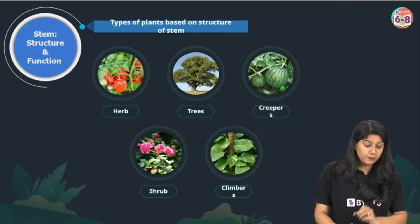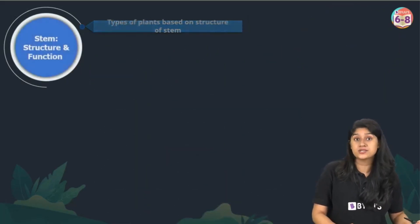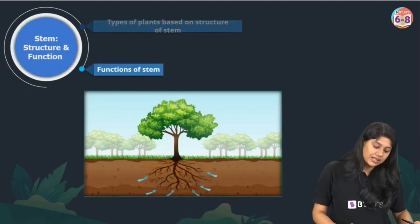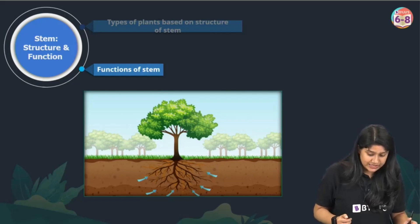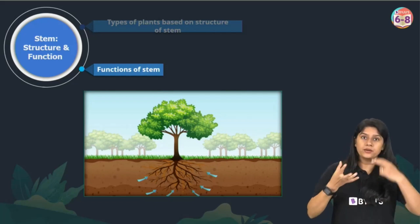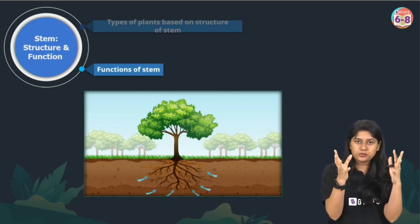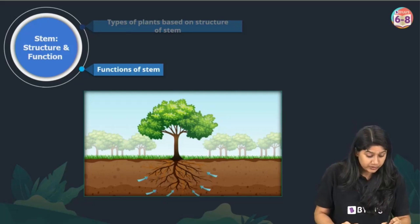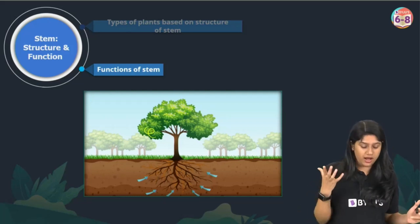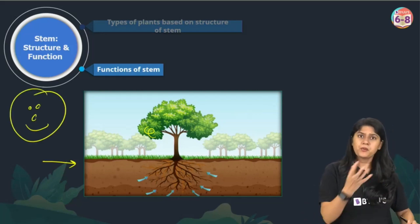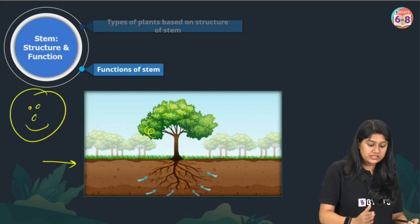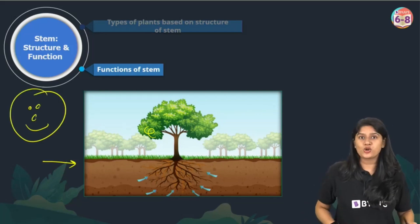Now let's discuss the functions of the stem. The stem is above the ground and provides structure, holding the leaves, fruits, and flowers together. It also provides support to the whole plant. These are the important functions of the stem.